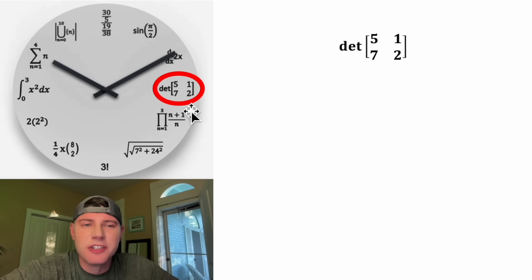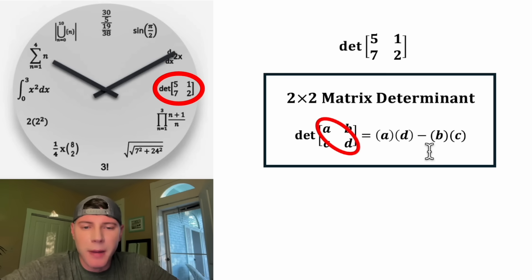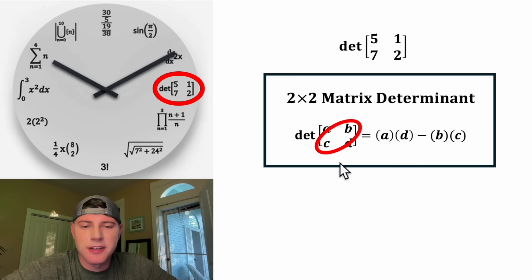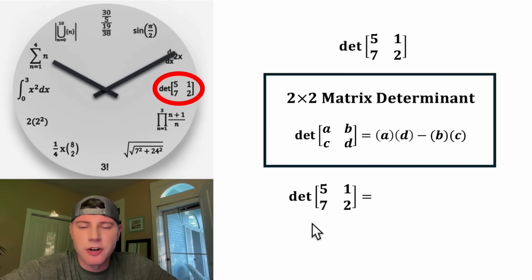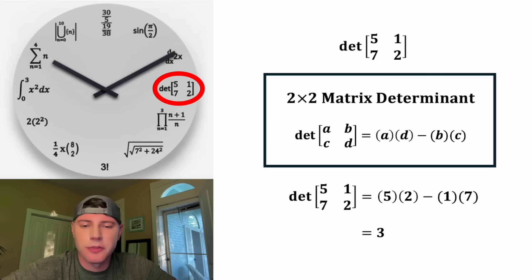Next, let's find the determinant of this matrix. For the determinant of a 2×2 matrix ABCD, you do A times D minus B times C. So for our determinant it'll be 5 times 2 minus 1 times 7. This simplifies to 10 minus 7, which is equal to 3. So this determinant is equal to 3, and that's why this is in the 3 o'clock slot.